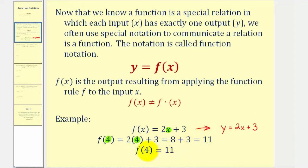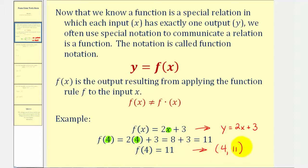So we say f of four equals 11. We should also recognize this represents a point on the graph of our function, where the x-coordinate is four and the y-coordinate is 11. So when we find function values, notice how we're finding y-values. Let's take a look at several more examples.